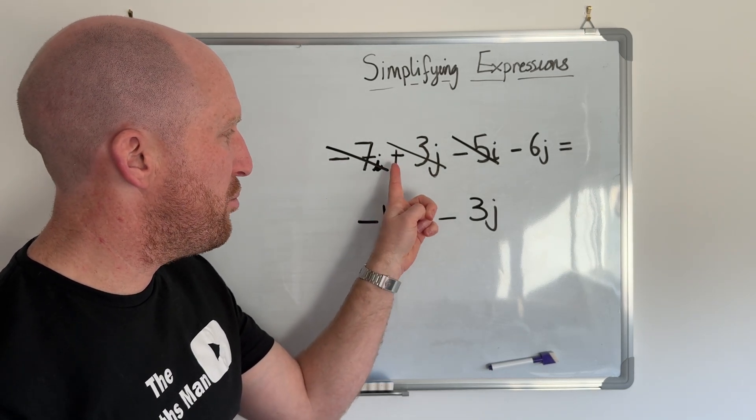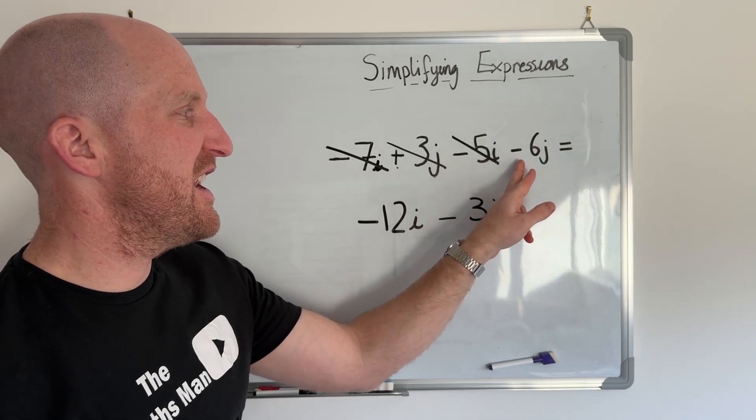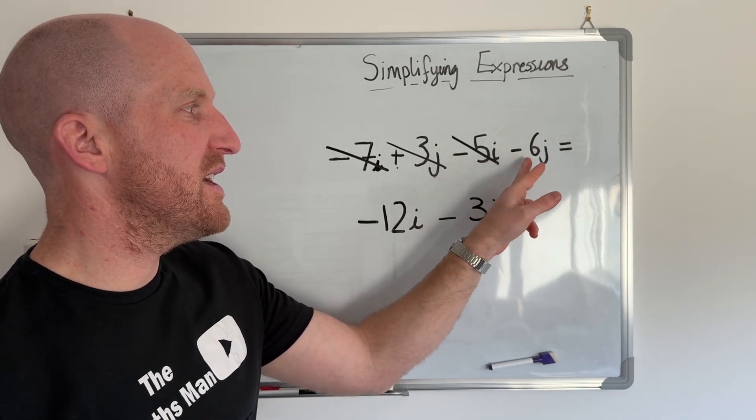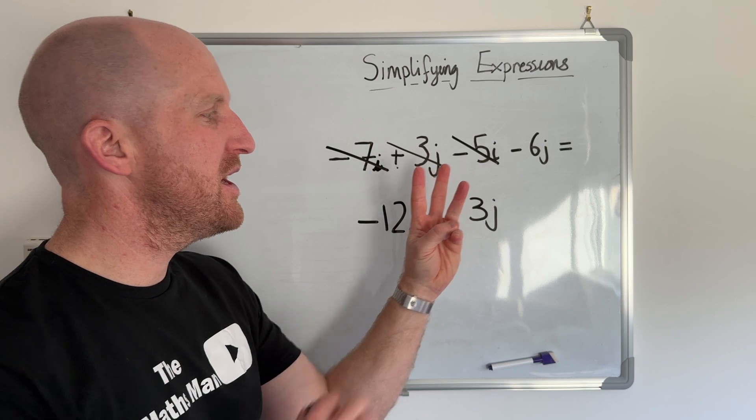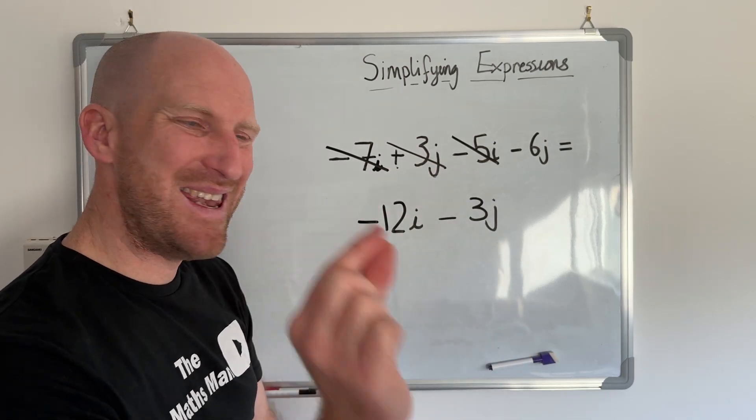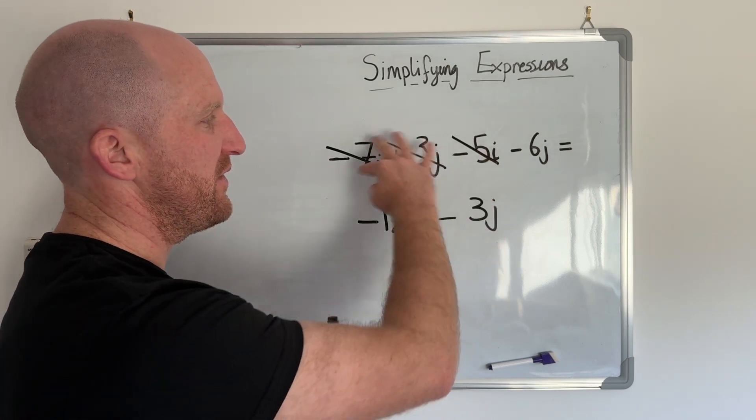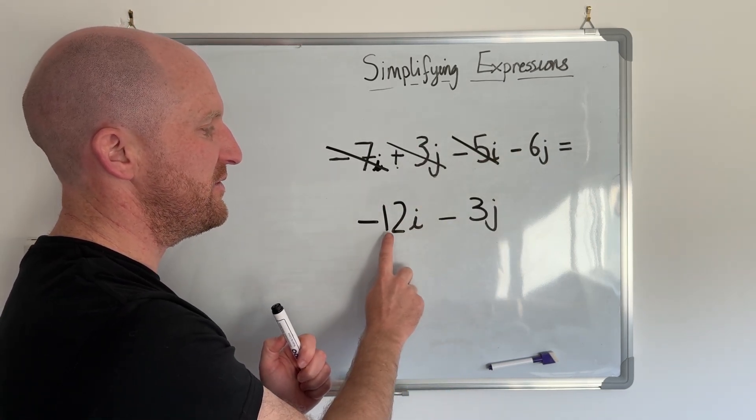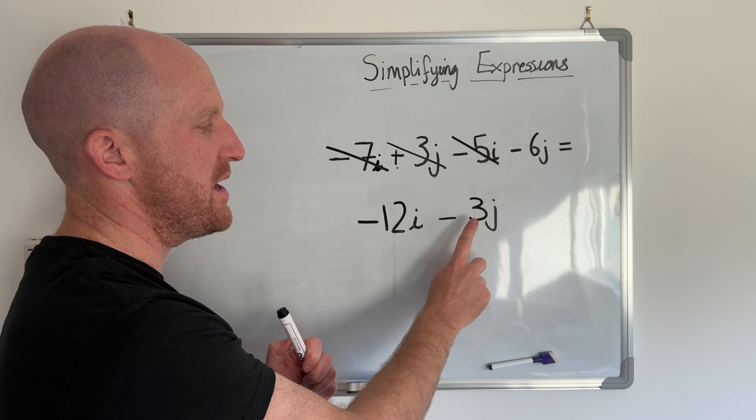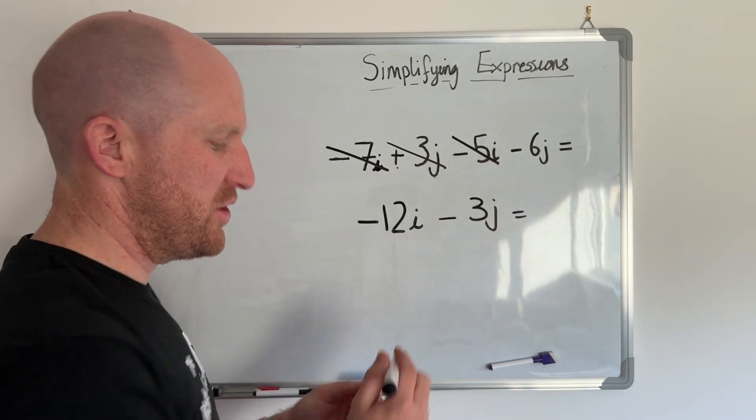That bit might have confused you so I'll just explain that a little bit more. So I've got I have positive 3j and then I had negative or take away 6j. So I have 3j take away 6 gives me negative 3. And that negative part is going to be the take away. So if I've simplified this it's going to be negative 12i take away 3j. And that is that expression simplified.